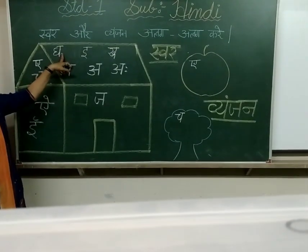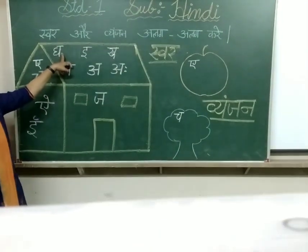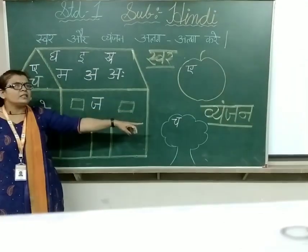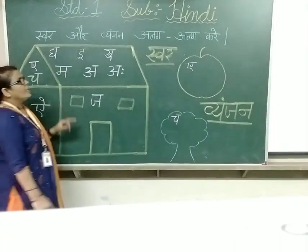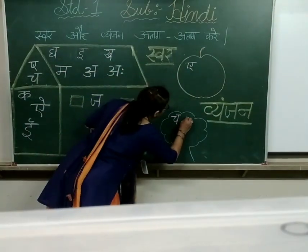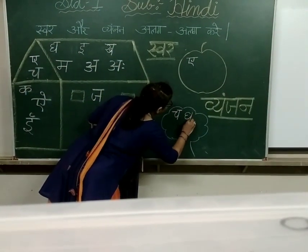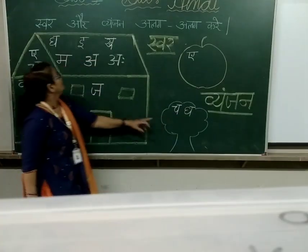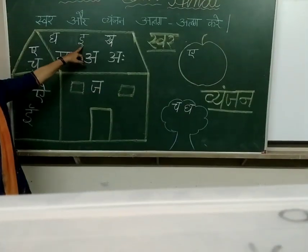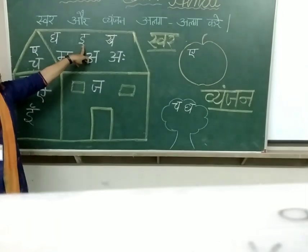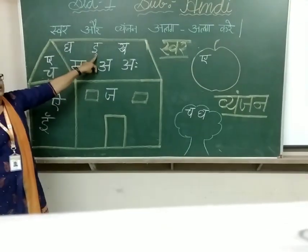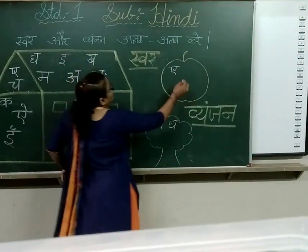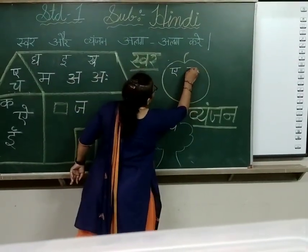Then घ से घर — घ से घर क्या होता है? Swar or Vyanjan? घ से घर Vyanjan hota hai. Agar Vyanjan hai toh humein kahan likhna hai? Vriksh mein. Then next is इ से इमली — इ से इमली क्या होता है? Swar. So Swar humein kahan likhenge? Save mein. इ से इमली.